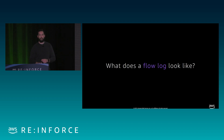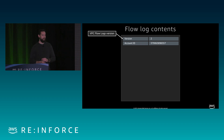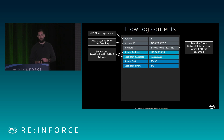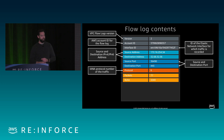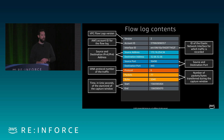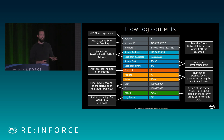Looking at what a flow log actually looks like, it starts with a version number, the account ID it's sourced from, the interface ID — the ENI of the instance — the source IP address and destination IP address, source port, destination port, protocol or the IANA protocol number, packets, bytes, the start and end of the capture window for the flow, the action — whether the flow was accepted — and then the log status. This is what a flow log looks like in its completeness.